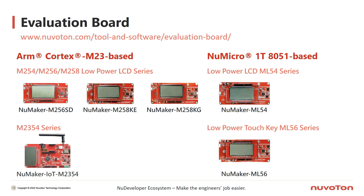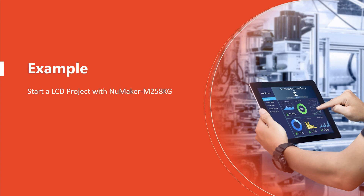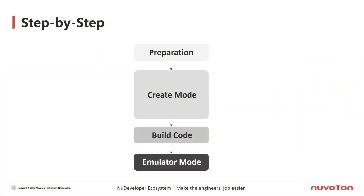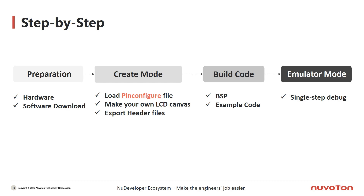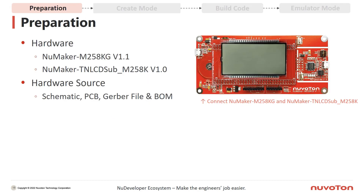If you need more information or want to buy it, please refer to the Newverton website. Now let's take the NuMaker M258-KG evaluation board for a simple practice. There are four steps for finishing a Comsec LCD project using LCDView: Step 1 is preparing hardware and software; Step 2 is importing the pin definition with the pin configure tool, editing LCD canvas and Comsec mapping, and exporting the header file; Step 3 is coding — Newverton provides BSP and example code so users need to do few modifications; and Step 4 is running and debugging under emulator mode using Keil IDE.